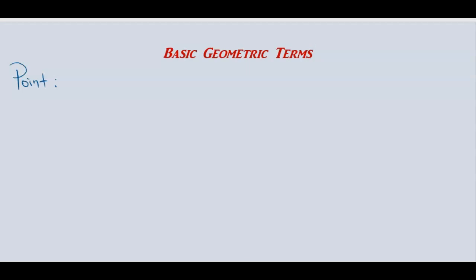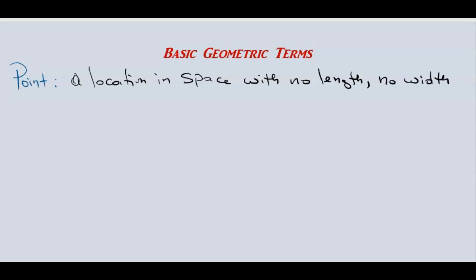Let's start with a point. A point can be described as a location in space with no length, no width, and no thickness. We can represent a point like this, and the symbol for the point is P — we can say 'point P.'